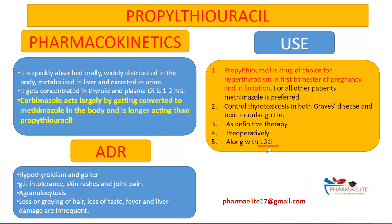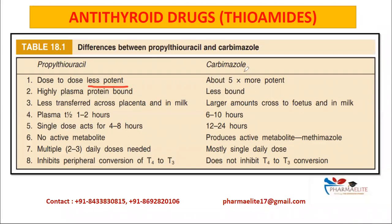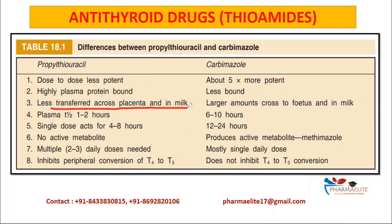This comparative table from KDT compares propylthiouracil with carbamazole. Propylthiouracil is less potent — carbamazole is about five times more potent dose for dose. Propylthiouracil is highly plasma protein bound, while carbamazole is less so. Crucially, propylthiouracil is less transferred across the placenta and into milk, whereas carbamazole crosses the placenta in larger amounts and concentrates in milk — this is why propylthiouracil is preferred in pregnant women.